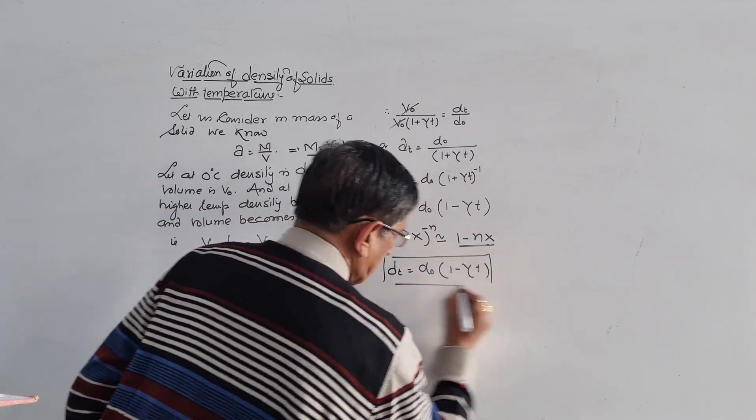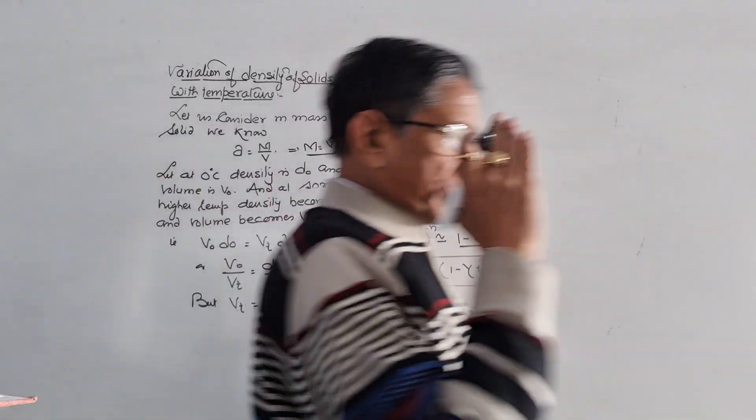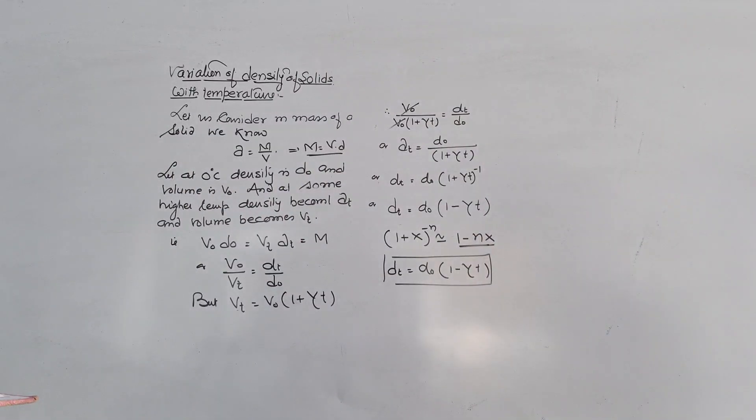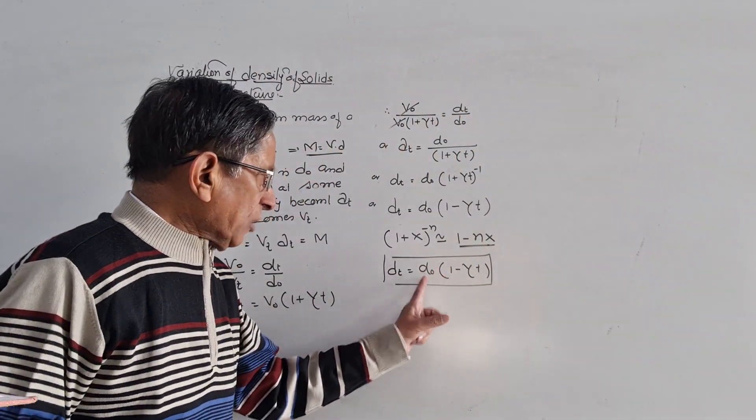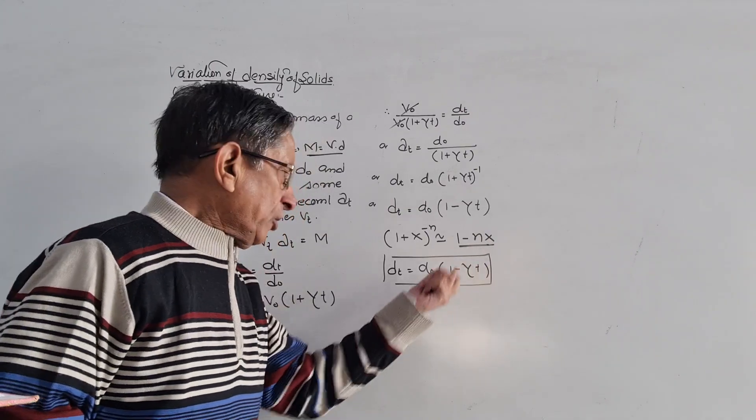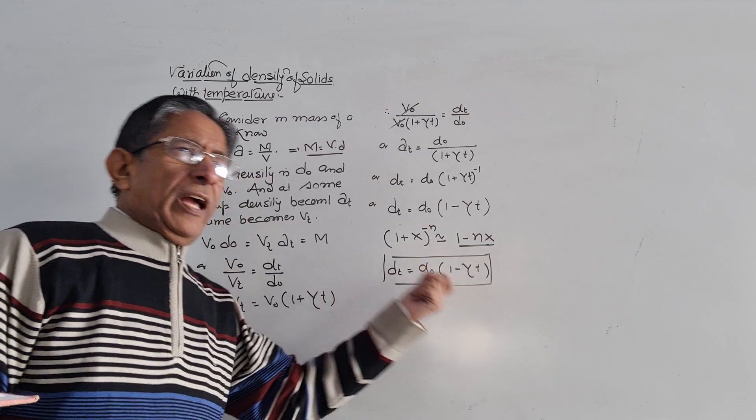So we can say with increasing temperature the density will decrease. With increasing temperature, density will decrease. Why? Because there is a minus sign here. This means Dt equals D0 minus D0γt. So Dt is less than D0.